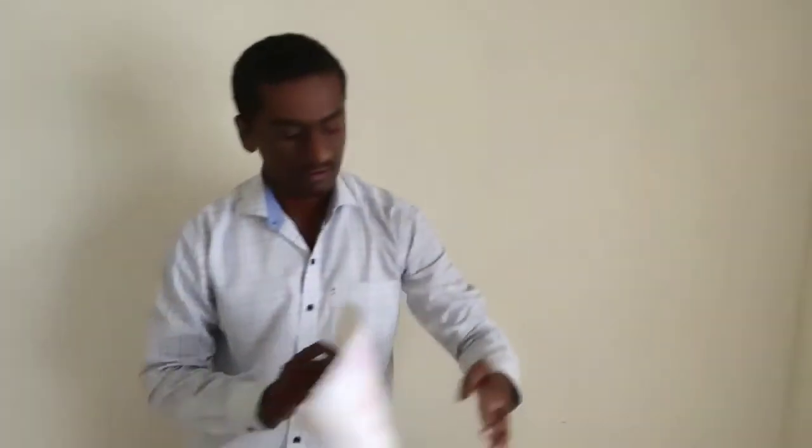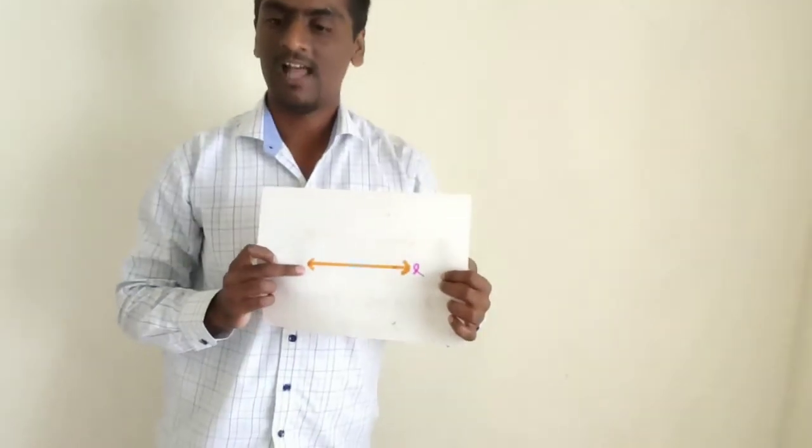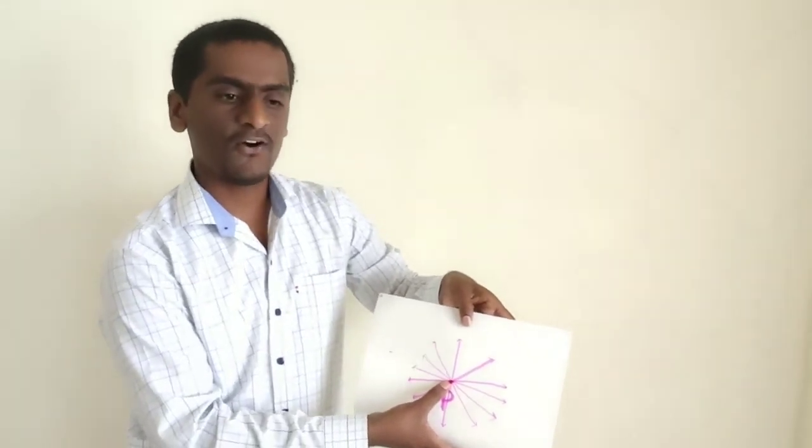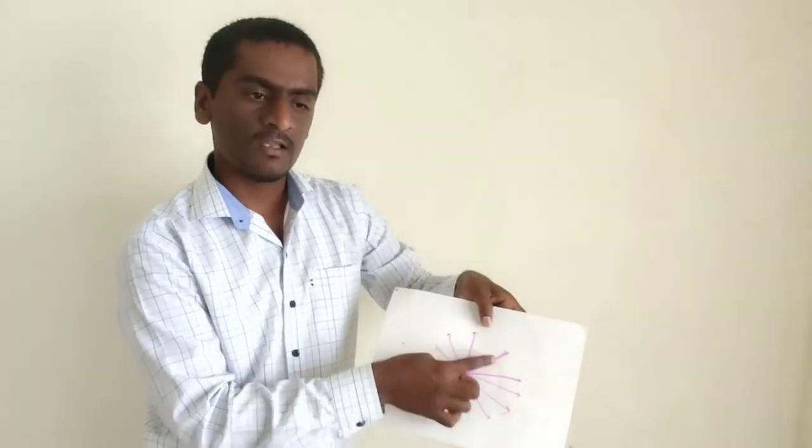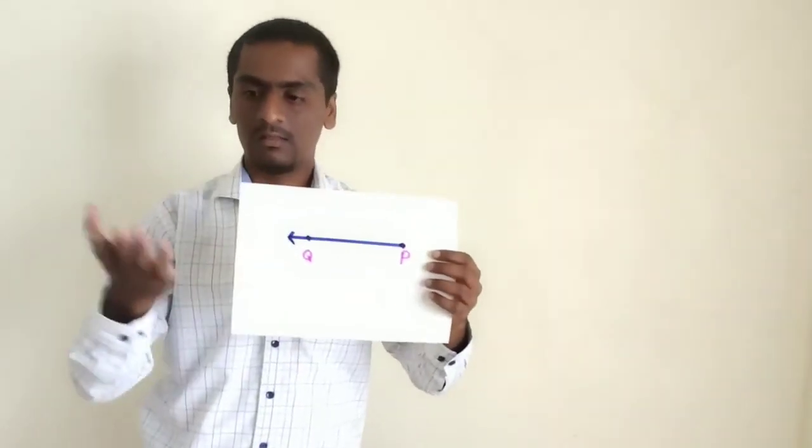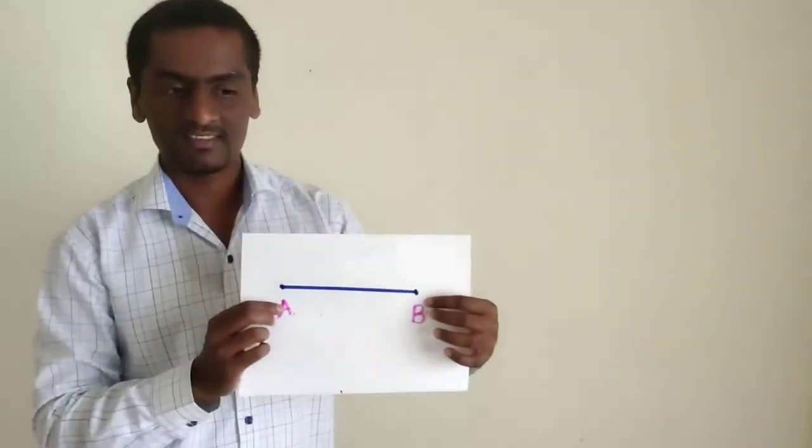Class, now I am showing you some pictures. You identify and tell me about that picture. Tell me, what is this? Point. Very good. What is this? Line. Very good. What is this? Very good, point of concurrence. And tell me, what is this? This is ray. Very good. Now what is this? Line segment. Very good, this is line segment.